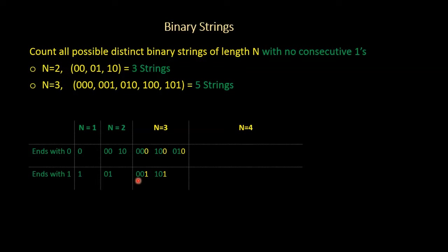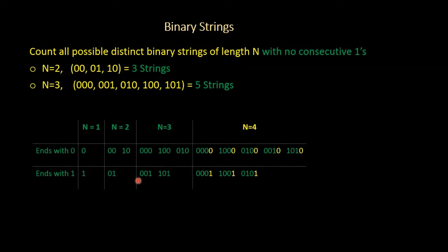We do the same procedure for n equal to 4. We take all the strings and append 0 to them, and then take only the strings which end with 0 and append 1 to them. That's the procedure we follow to get all the strings.